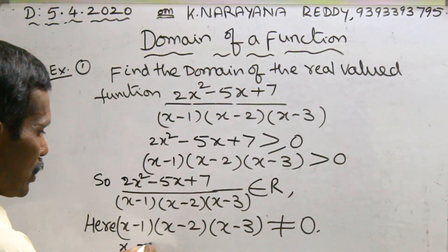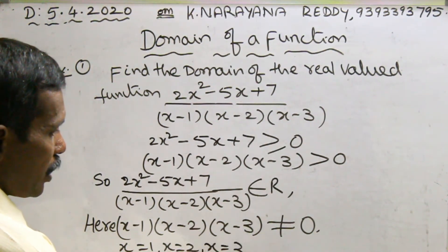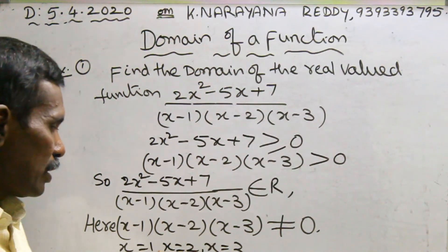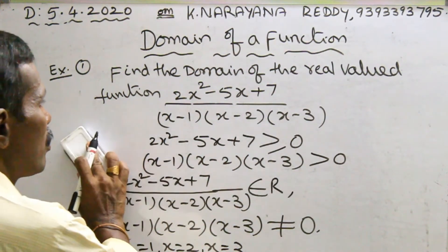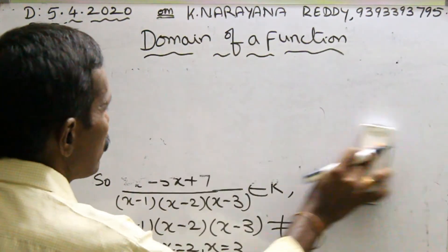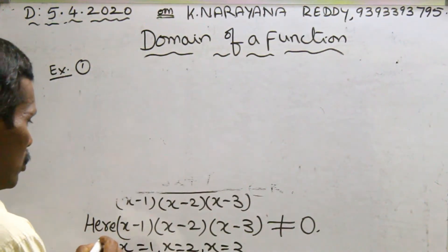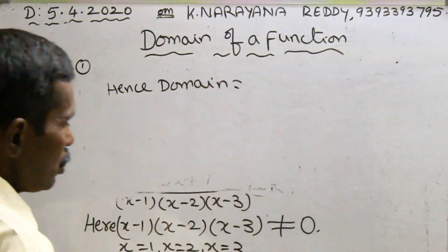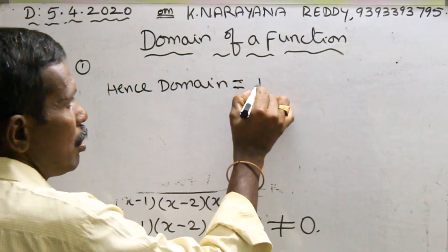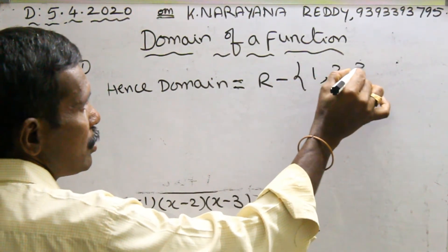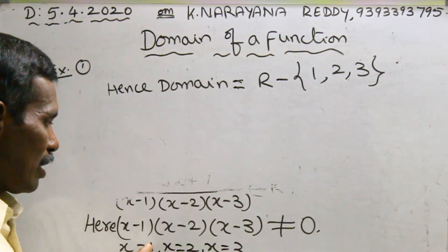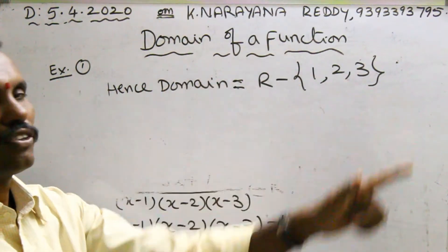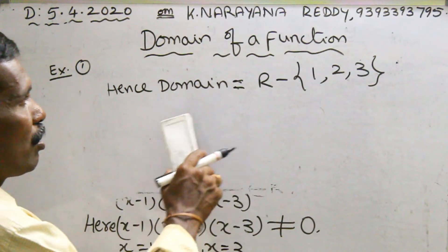So x equal to 1, x equal to 2, x equal to 3 — we can't take these values. We can take all remaining other values belonging to R. That is the domain. So, domain equals R minus {1, 2, 3}. Simply, you can omit the values 1, 2, 3 from real numbers. Remaining all are domain values. This is the domain for this function.